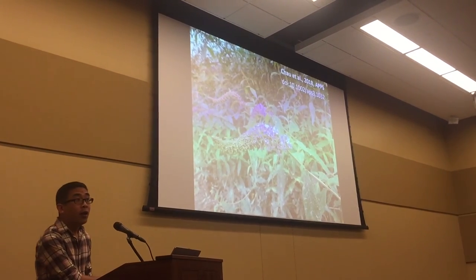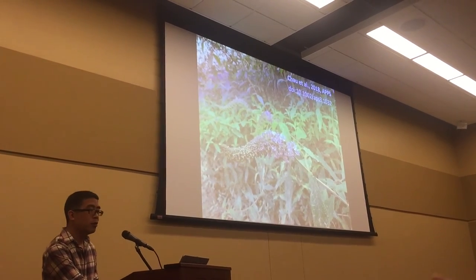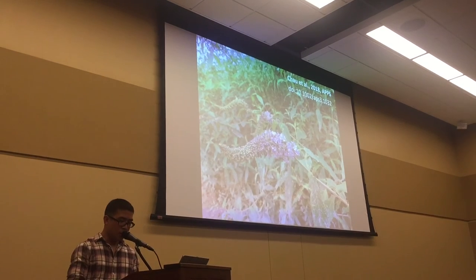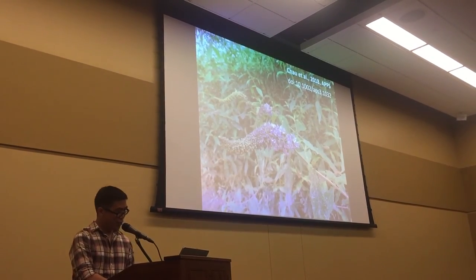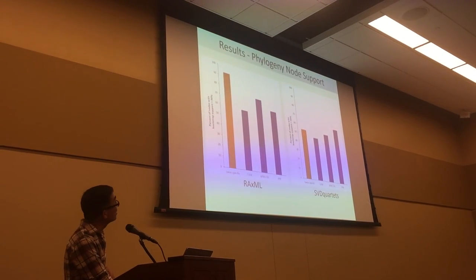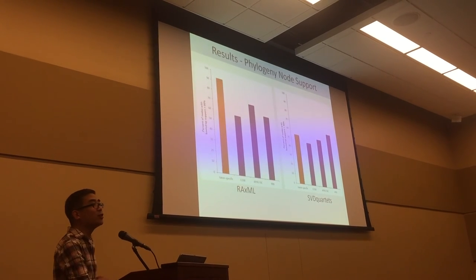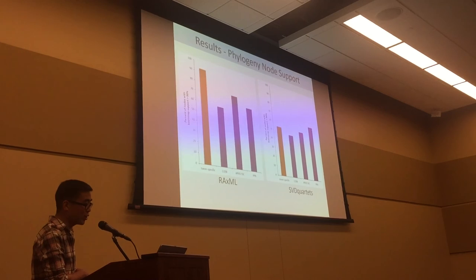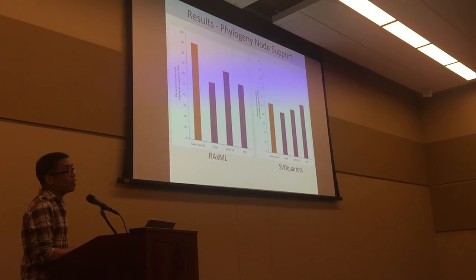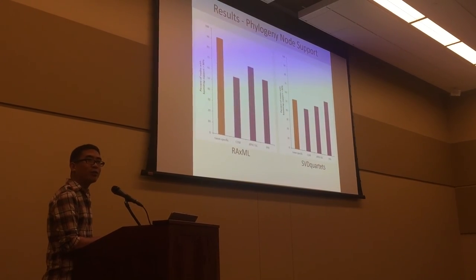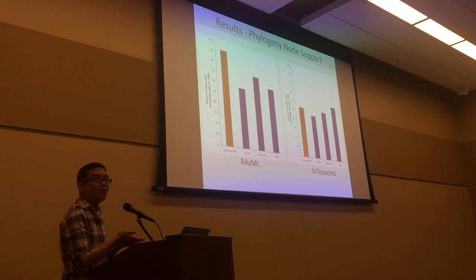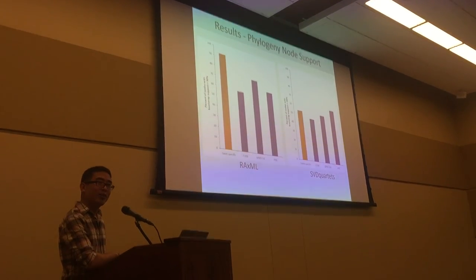Question: Since you have more data collected for the taxon-specific loci, why would you expect lower support in your coalescence-based analysis? Response: The question was why the taxon-specific set, with more data, didn't produce the most well-supported tree under SVD Quartets. I'm not sure of the answer. It might be that there's more noise in those data — they weren't as variable as some of the general sets, so with the bootstrapping process, it might not be converging on the same result.